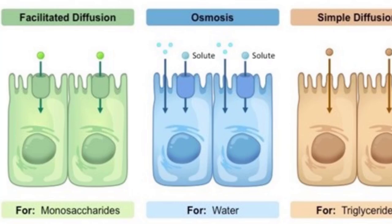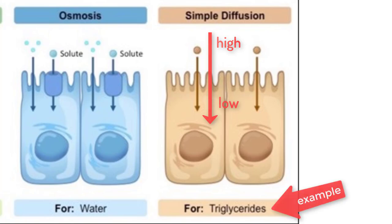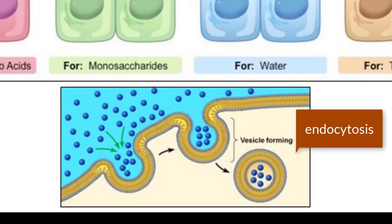Next is osmosis, which describes the diffusion of water from a high concentration to a low concentration. These molecules move across cell membranes in response to solute concentrations, which aids in water being absorbed in the small and large intestine. Next, we have simple diffusion, where hydrophobic molecules pass through the cell membrane based on a concentration gradient that requires no energy. Finally, the last type of transport is endocytosis, which can move molecules in bulk across the membrane by creating a vesicle that moves contents into the cell.